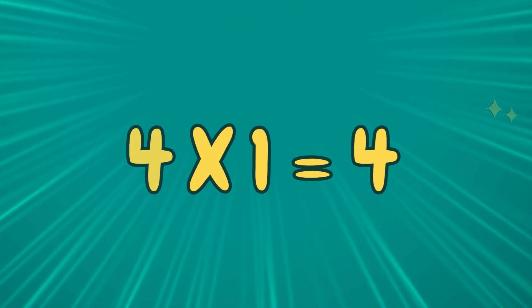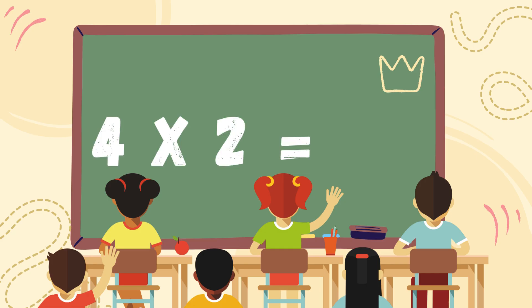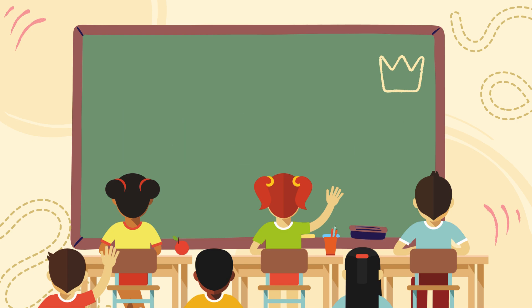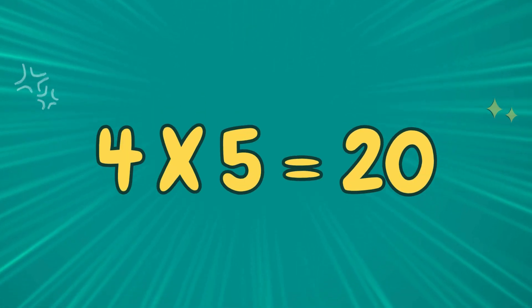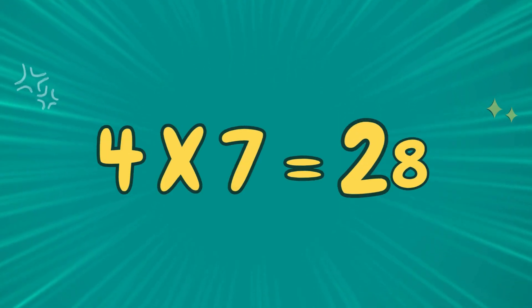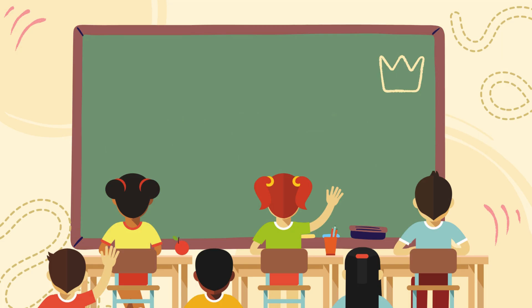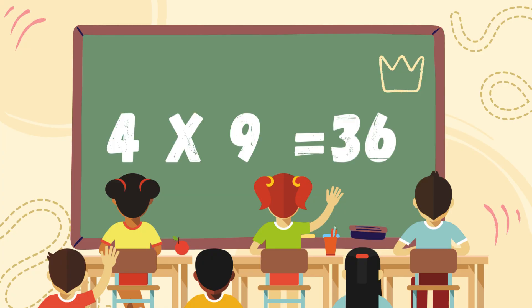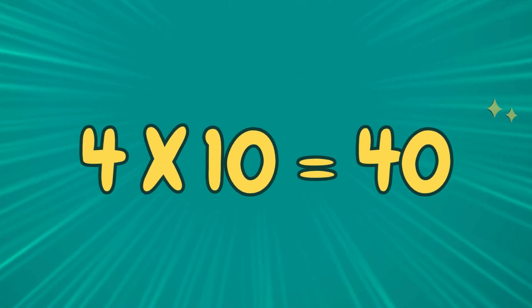Four ones are four. Four twos are eight. Four threes are twelve. Four fours are sixteen. Four fives are twenty. Four sixes are twenty-four. Four sevens are twenty-eight. Four eights are thirty-two. Four nines are thirty-six. Four tens are forty.